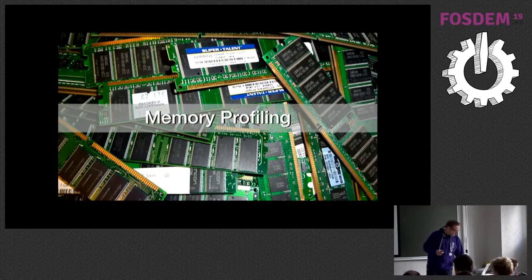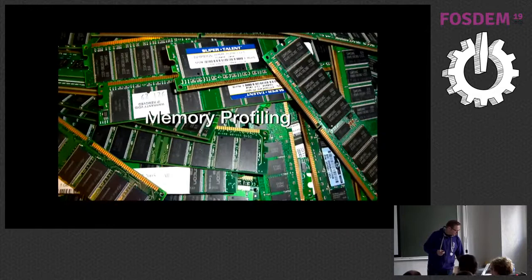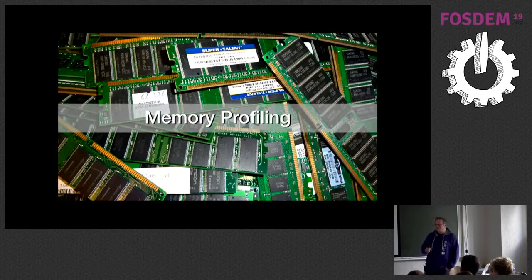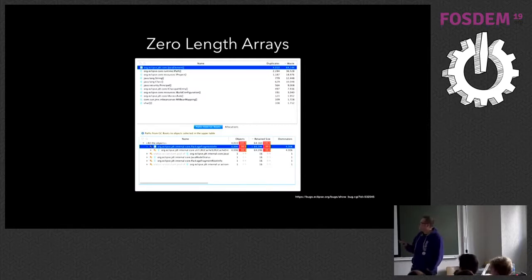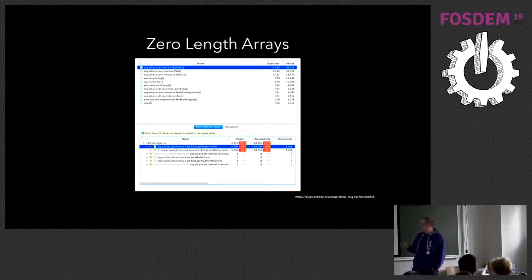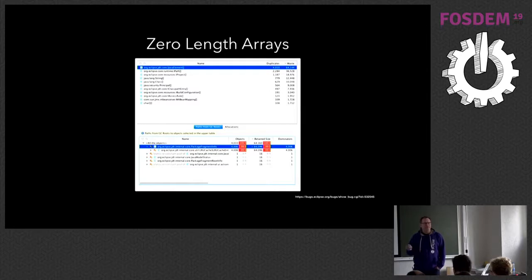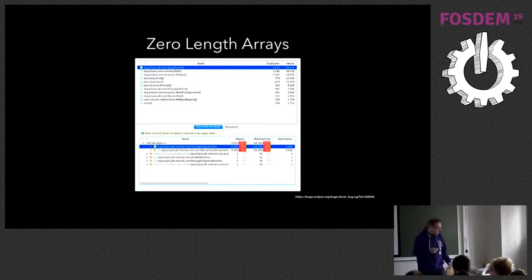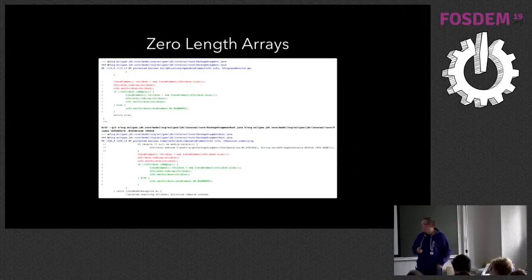Talking about memory: if you start up Eclipse, you would recognize it consumes not so much memory anymore — we are really tweaking that. For example, in JDT we're tweaking zero-length arrays. When you don't have annotations or whatever, often a new array with zero length is created, which wastes memory. We refactored this by using constants, so if you want to have an empty array, just use the constant. This is one example of a change where we did this.